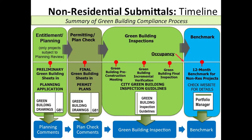In this slide you'll notice the timeline for a typical non-residential project. On the left hand side you'll notice the planning and entitlements phase, and this is only for projects subject to planning review. Some projects will come in right at permitting and won't be subject to planning, but if the project is subject to planning then we will need to see preliminary sheets included in the planning application, in the form of a GB1 sheet.